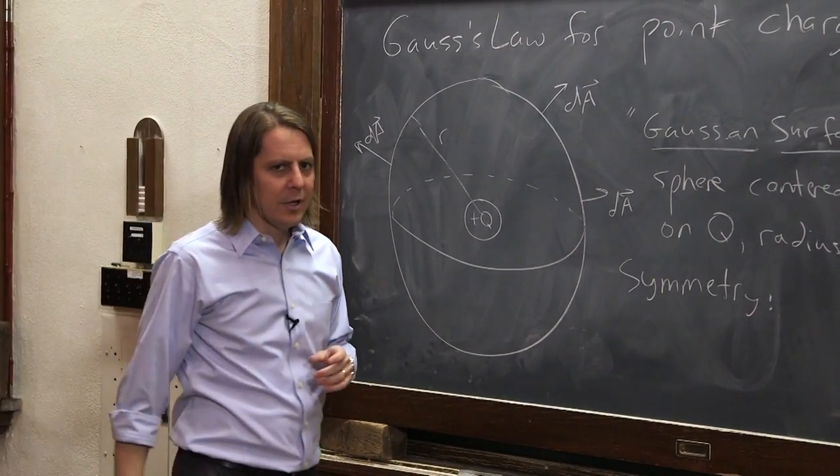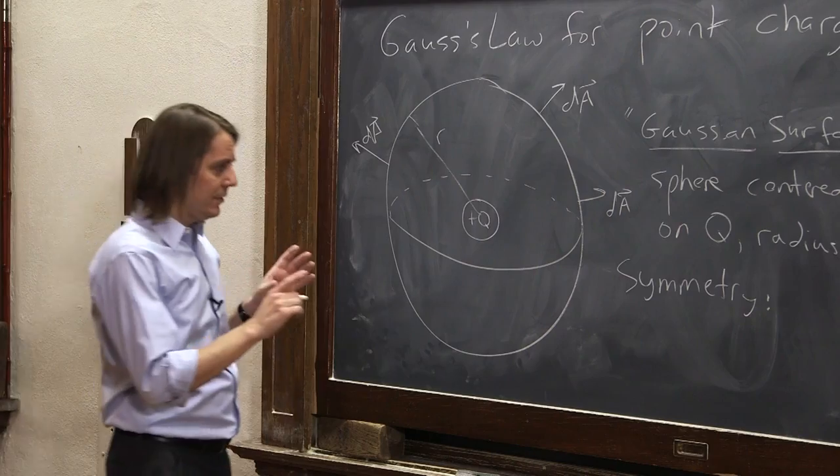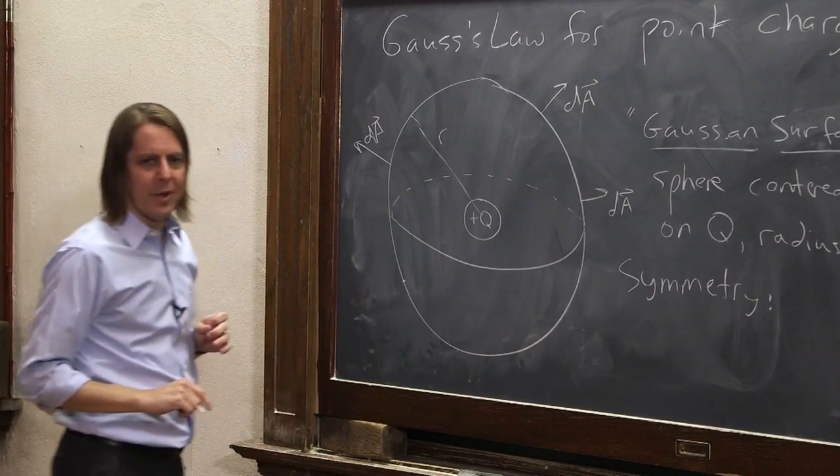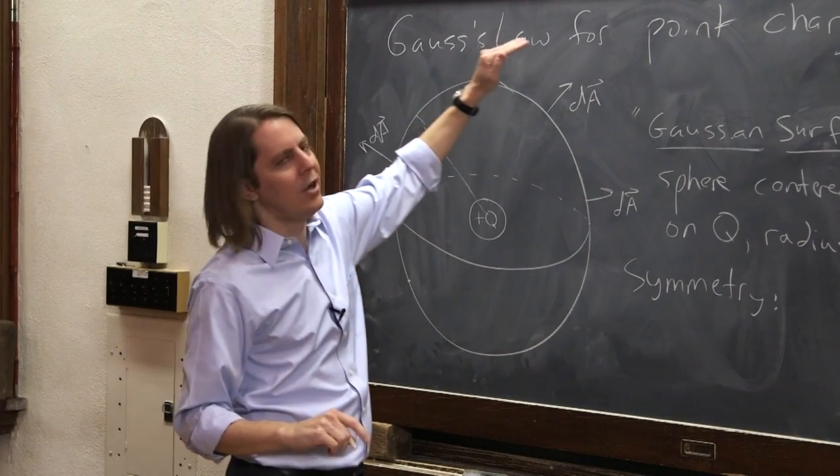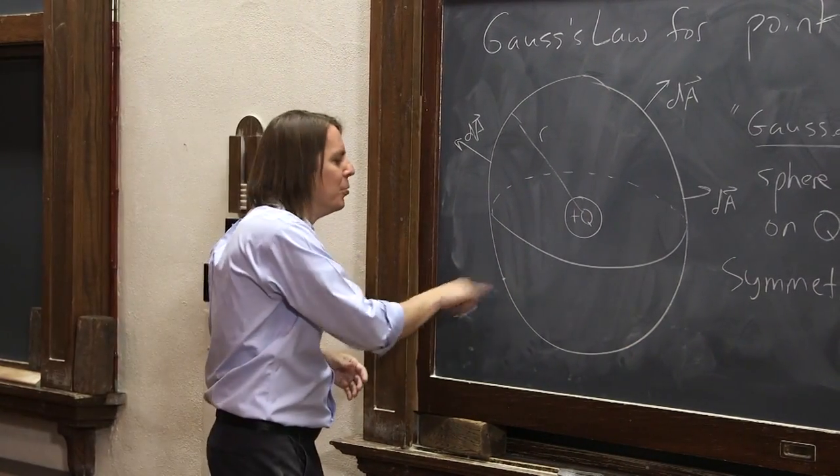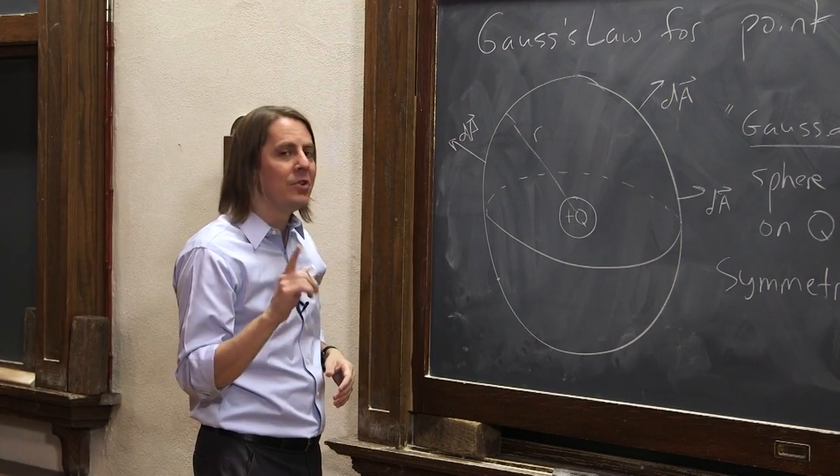But also due to symmetry, the electric field always sticks out. That's trickier to see. I'm using Gauss's law to derive Coulomb's law. You may say I'm cheating by assuming which way the E field points, but I'm really using symmetry.